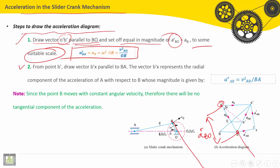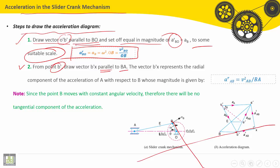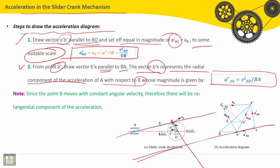Second step: from the point B dash, draw the vector B dash X, which is parallel to BA. The vector B dash X represents the radial component of the acceleration of A with respect to B, whose magnitude is given by this formula: ARAB is equal to the velocity of AB squared divided by BA. Then we have to set off the magnitude ARBA, which is known.